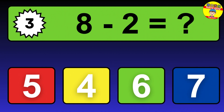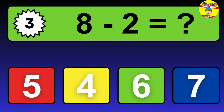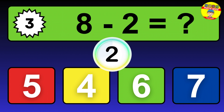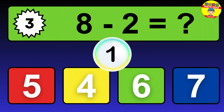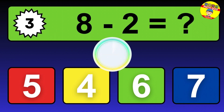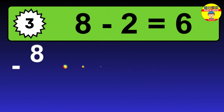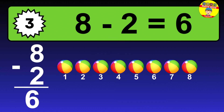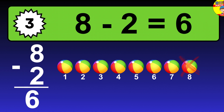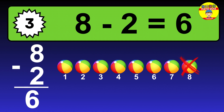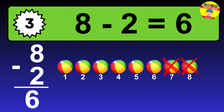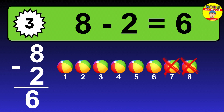Question 3. 8 minus 2 equals what? The answer is 8 minus 2 is 6. Let's count it: 1, 2, 3, 4, 5, 6.